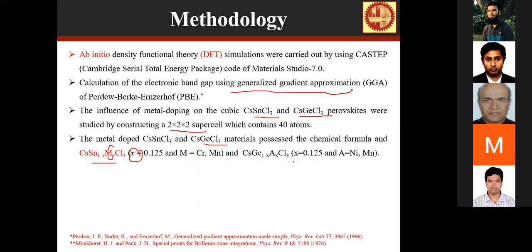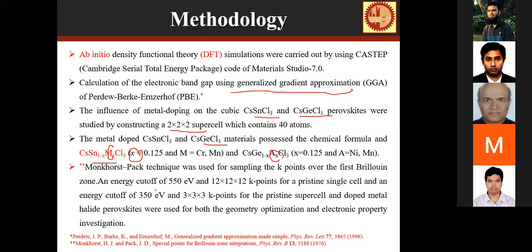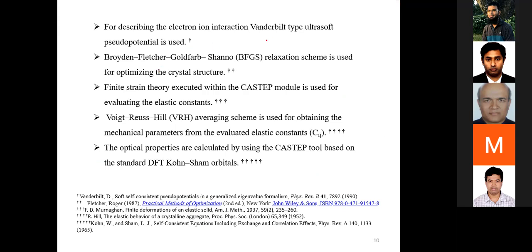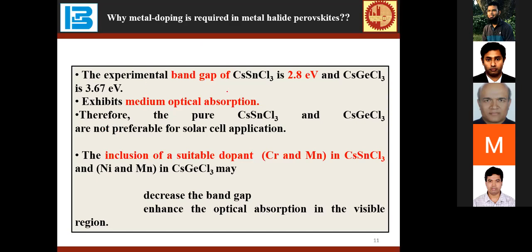M is chromium and manganese, as already mentioned. The Monkhorst-Pack technique was used for sampling k-points over the first Brillouin zone. The Broyden-Fletcher-Goldfarb-Shanno relaxation scheme is used for optimizing the crystal structure. Finite strain theory executed with the VASP code is used for evaluating the elastic constants to study the mechanical properties of the material. The Voigt-Reuss-Hill averaging scheme is used for obtaining mechanical parameters from the evaluated elastic constants. Optical properties are calculated using VASP based on standard DFT.